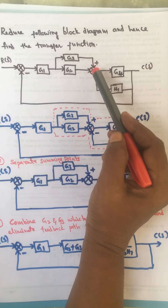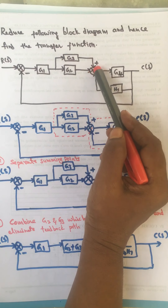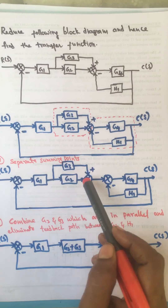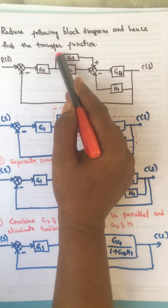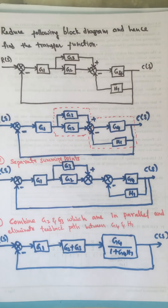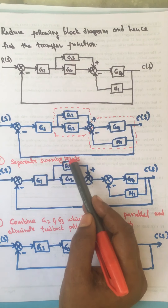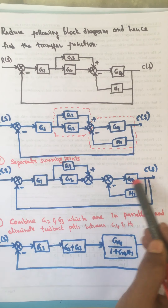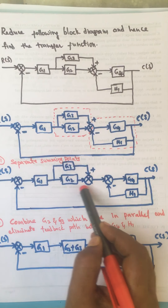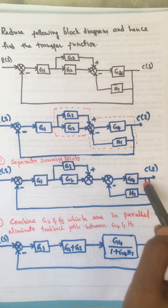First, we divide this mixer into two parts. This is one part and this is the other part — that is how we divide this mixer into two parts. So these two blocks are in parallel, whereas these two blocks are in feedback.